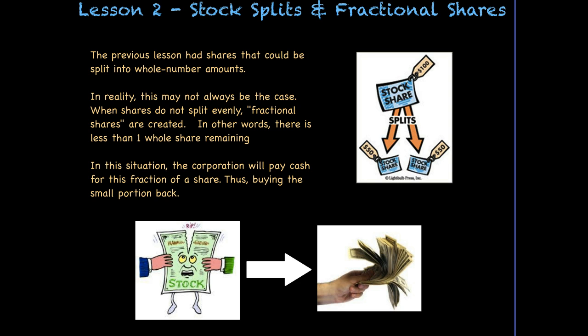The previous lesson had shares that could be split into whole number amounts, but in reality this may not always be the case. When the shares do not split evenly, we get fractional shares — in other words, less than one whole share. In this situation, the corporation will often pay out cash for this fraction, so they'll buy you out for your fraction.